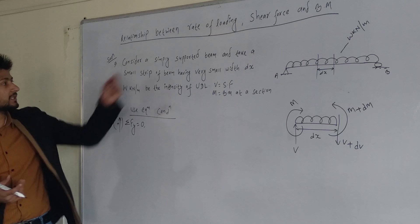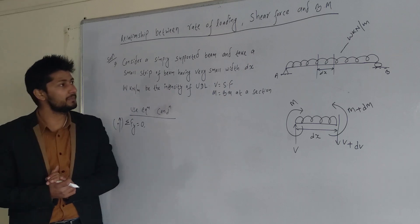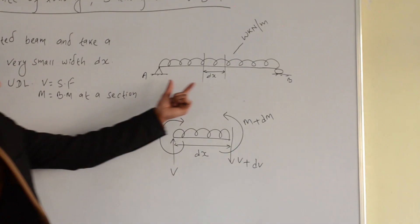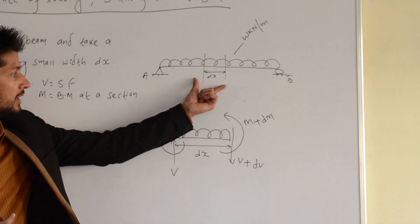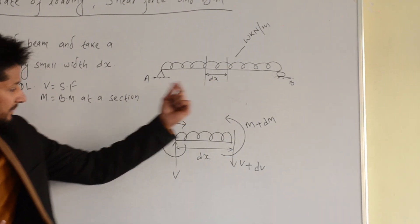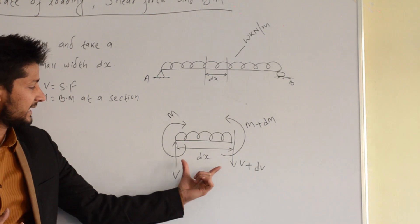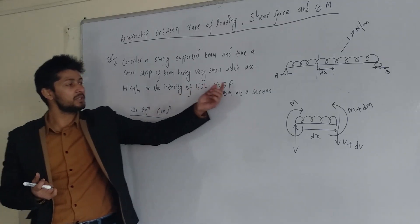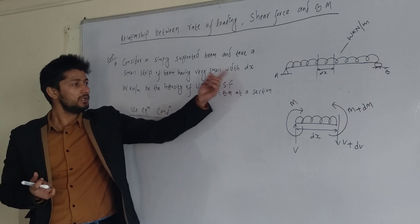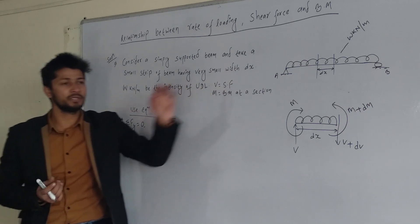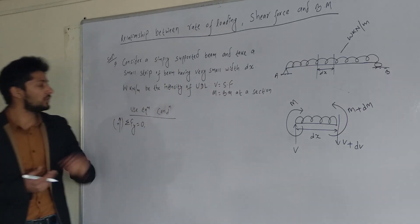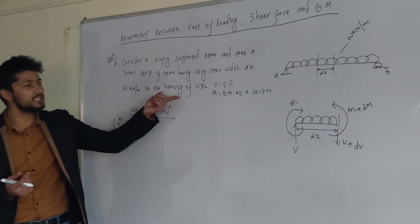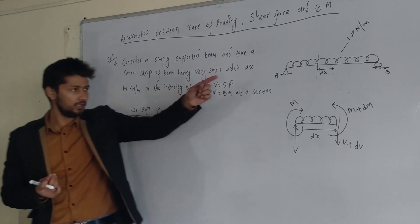First of all, consider a simply supported beam. This is a small strip element. V is the shear force and M is the bending moment. w is the constant intensity of uniformly distributed load in kN per m.